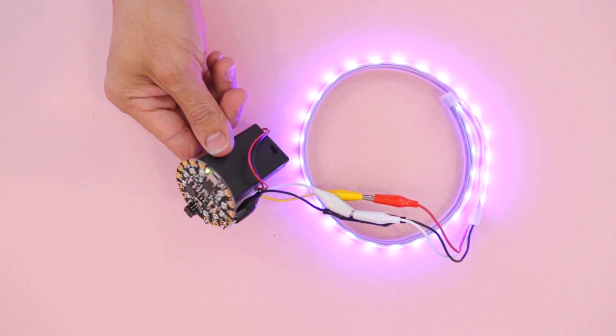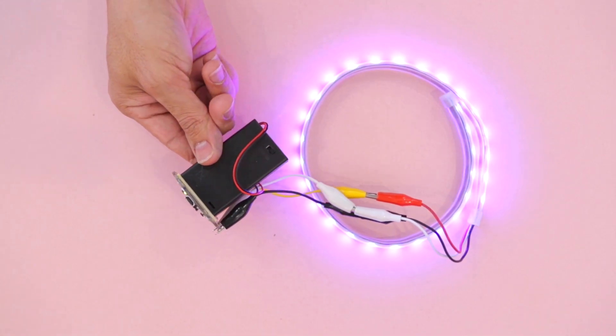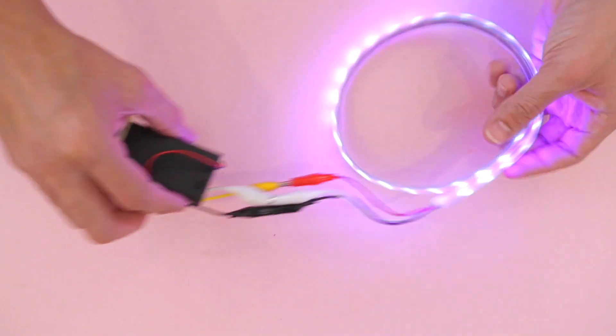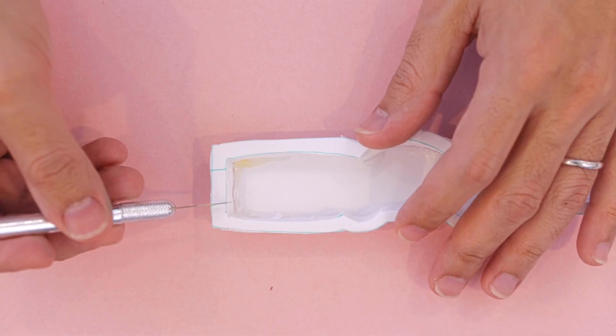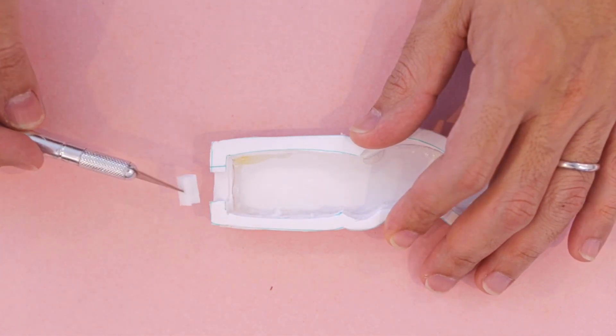The Circuit Playground Express is powered by a AAA battery pack. The NeoPixel LED strip has alligator clips so no soldering necessary. Make cutouts at the end for the LED strip so it can fit inside the blade.